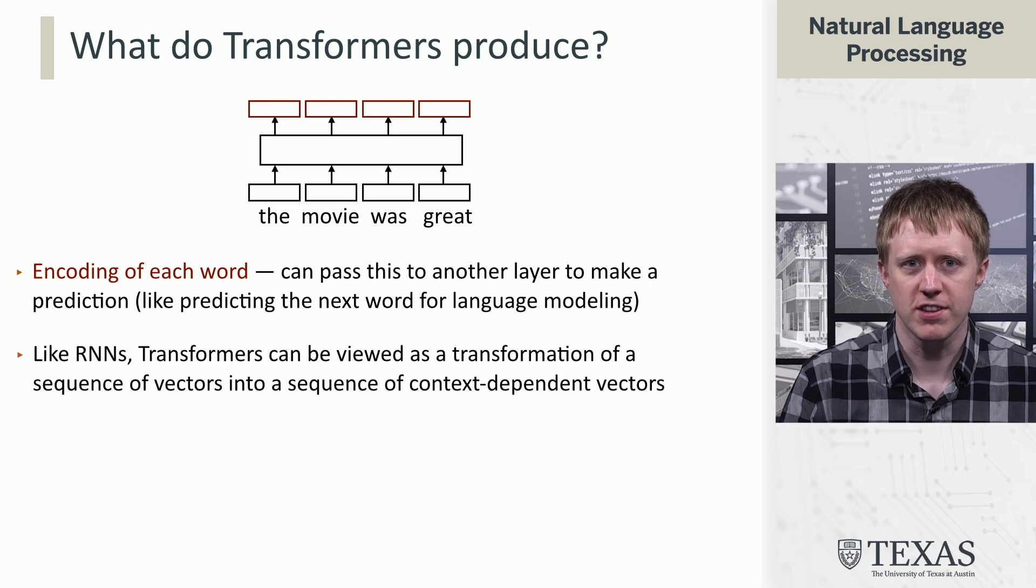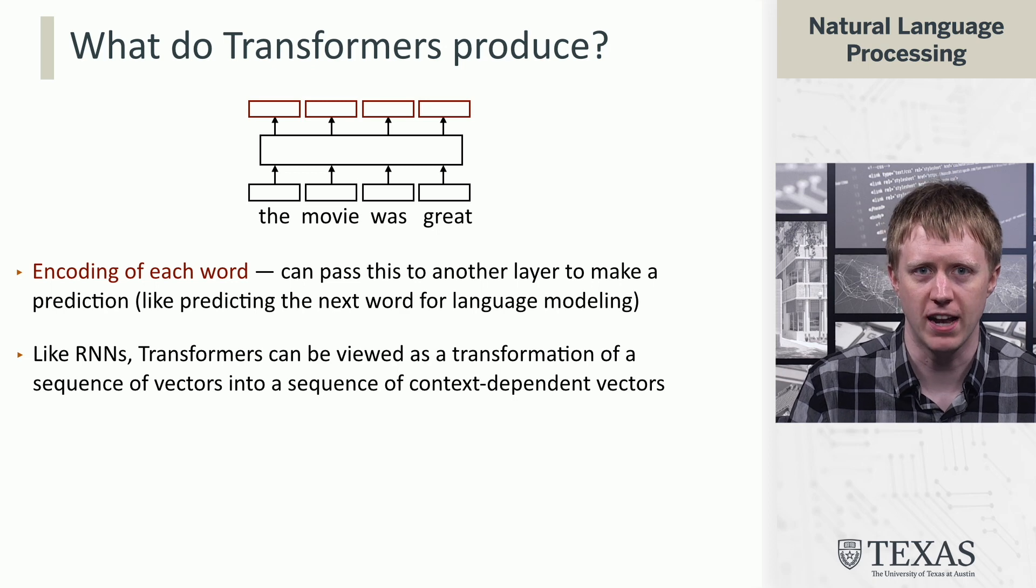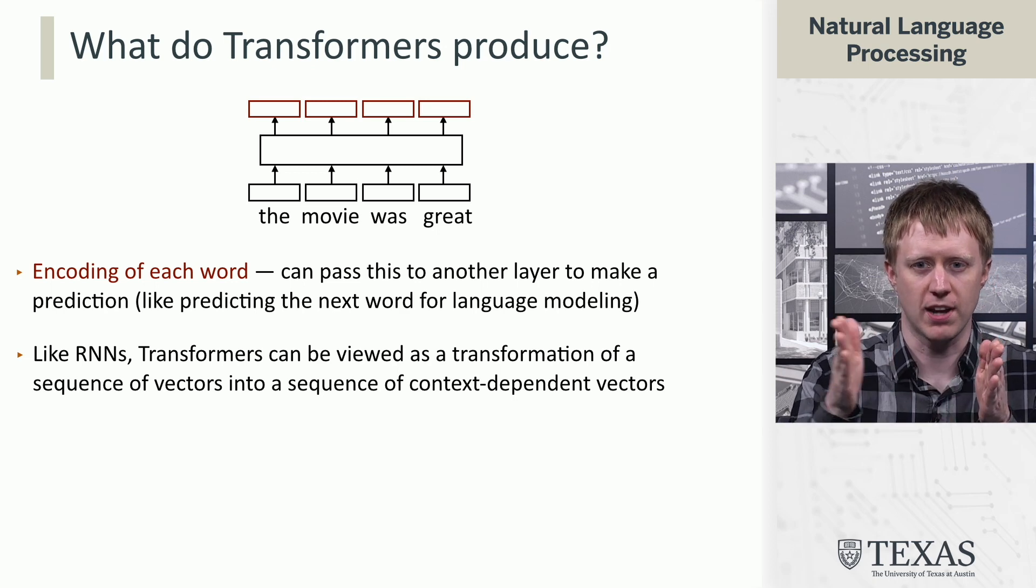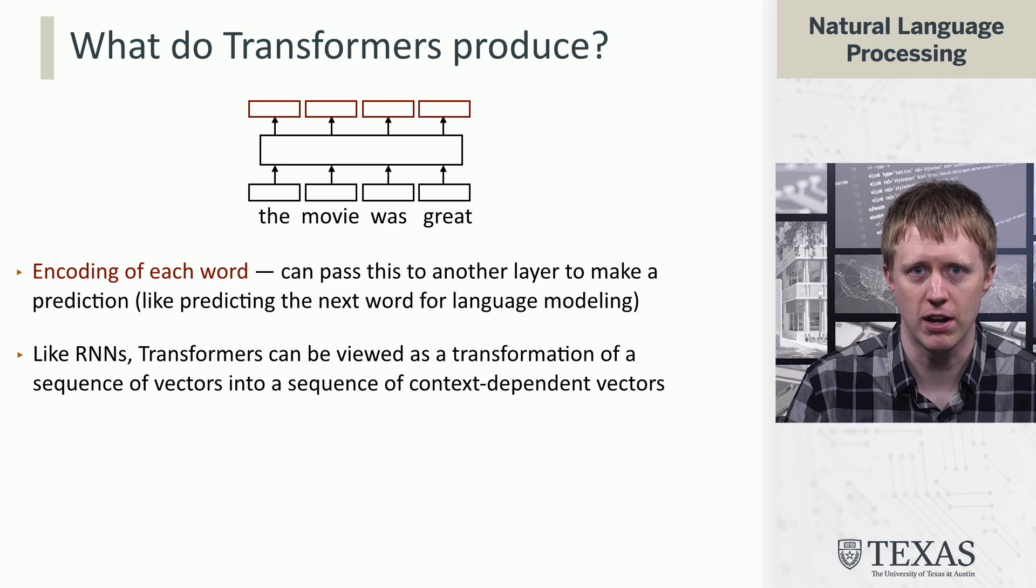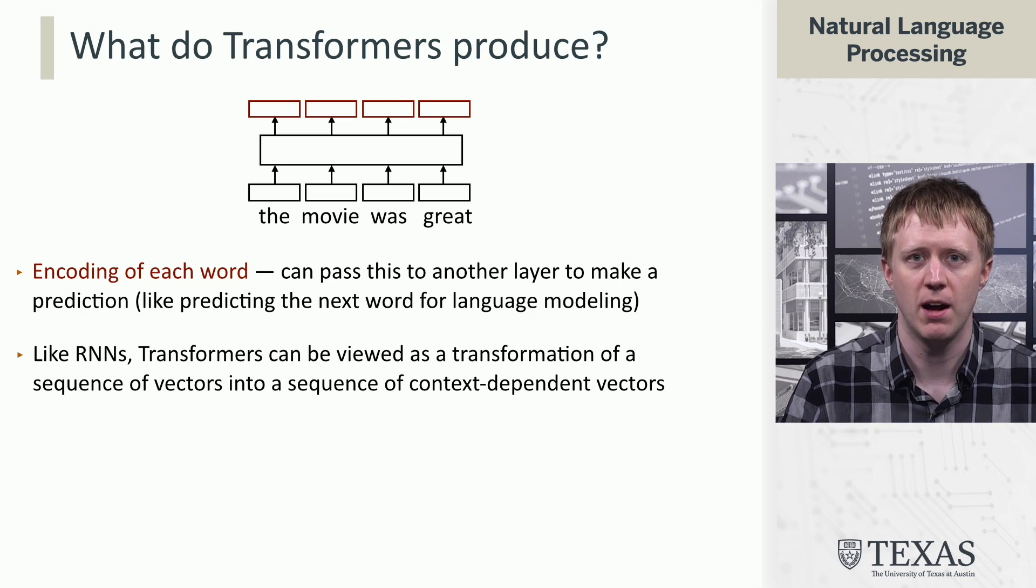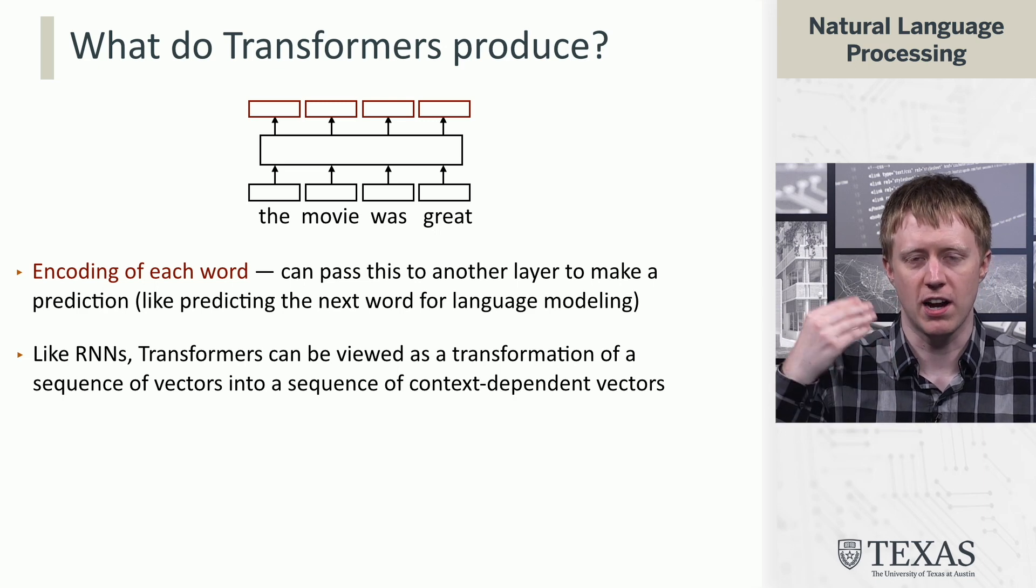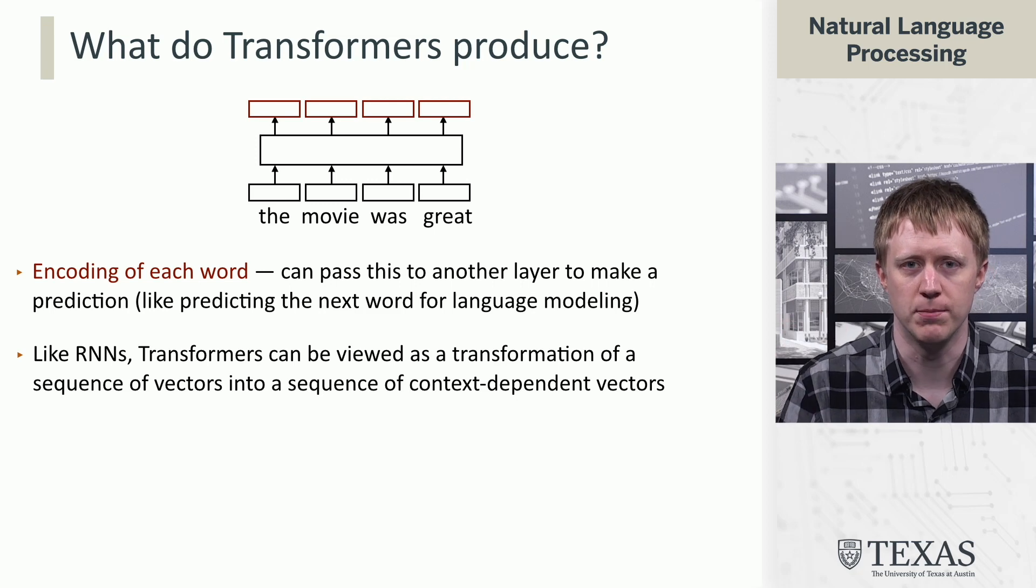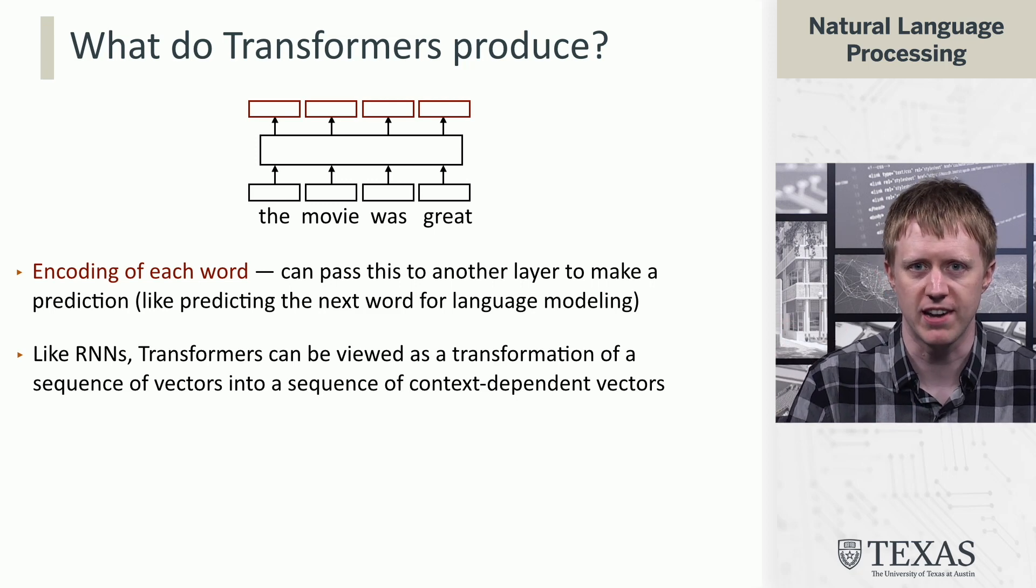This is actually the same sort of API that RNNs have. RNNs also produce these cell states, so transformers don't really materialize those in the same way, but this kind of producing context-dependent representations of items in a sequence, they're exactly fungible.